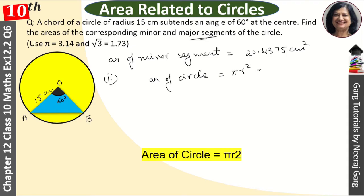Pi r squared is 3.14 into 15 into 15. When we solve it, the answer will be 706.5 cm squared. This is our area of circle.